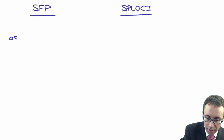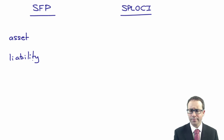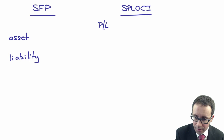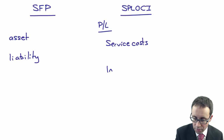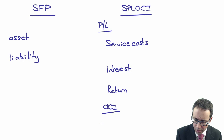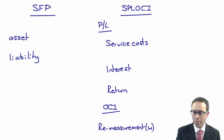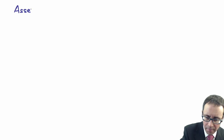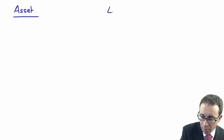We operate a defined benefit pension scheme. On the statement of financial position, we're looking at the pension asset netted off against the pension liability. On the statement of profit or loss and other comprehensive income, we're thinking about service costs, the interest, and maybe the return on assets. Then within other comprehensive income, we're looking at the remeasurement components. The remeasurement component would need a working — so split the page into two halves: a working for the assets and a working for the liability.